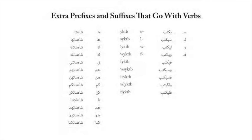In the past tense these forms do alphabetize together, but in the present tense they don't because the present tense uses prefixes and not suffixes. As if this were not enough, most verbs can take a variety of extra prefixes and suffixes beyond those involved in the actual conjugation. The suffixes are mainly pronoun endings representing the object. The prefixes include the future particle sa, the subordinating conjunction li, and the conjunctions fa and wa. The conjunctions can be attached to any form, while the other particles are limited to present tense forms.